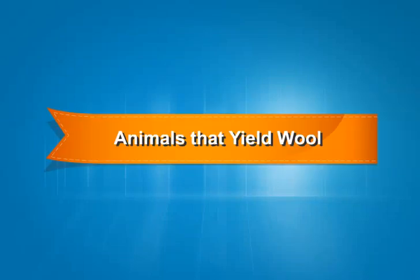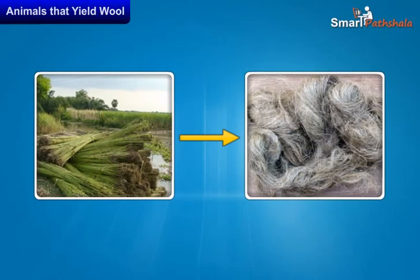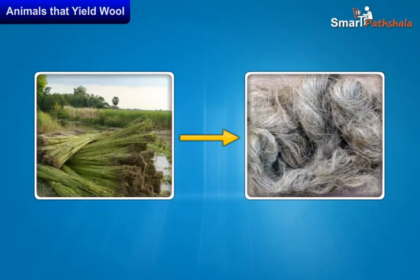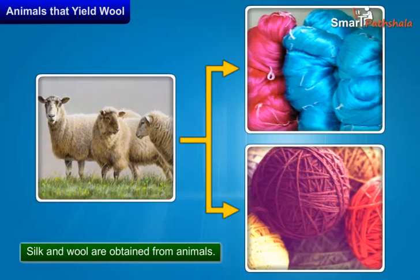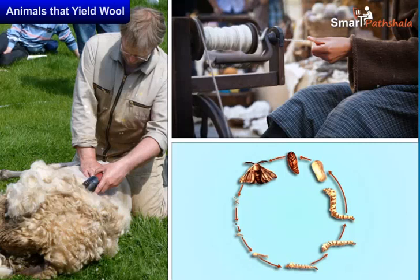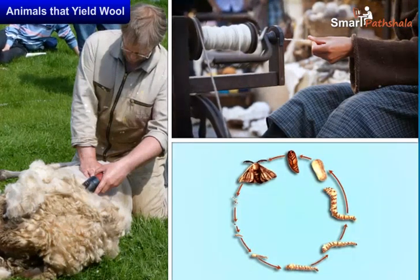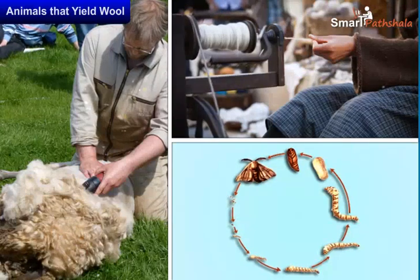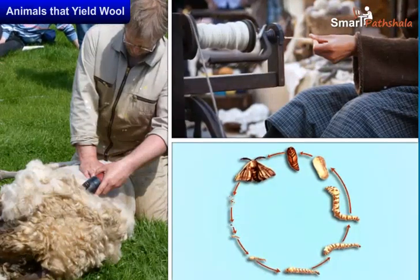Animals that yield wool. In our earlier classes, we have learnt about some fibres obtained from plants. Apart from plants, some fibres like silk and wool are obtained from animals. In this chapter, we will learn about animals that yield wool, processing fibres into wool, and the life cycle and rearing of silk moth.